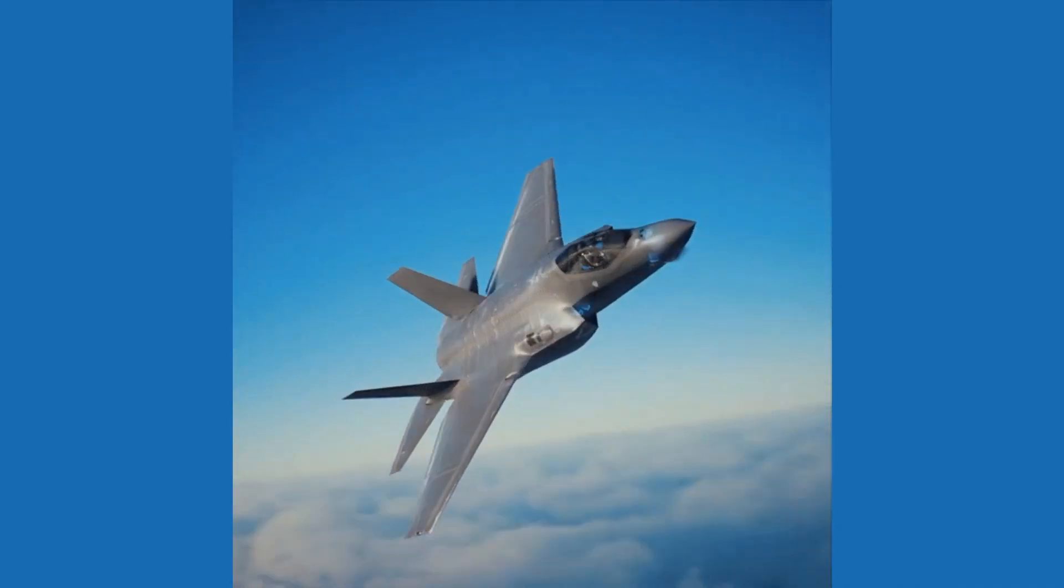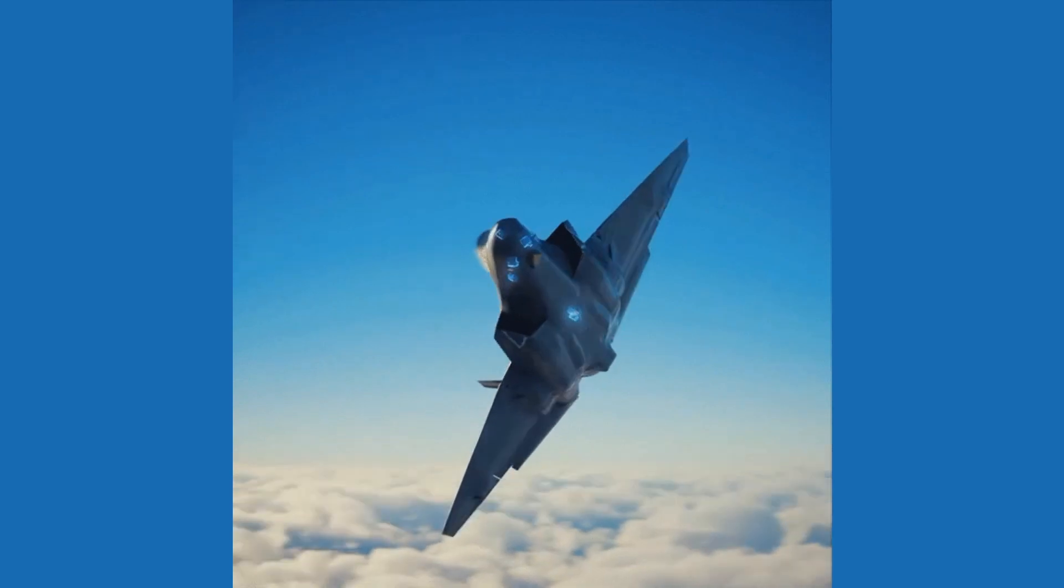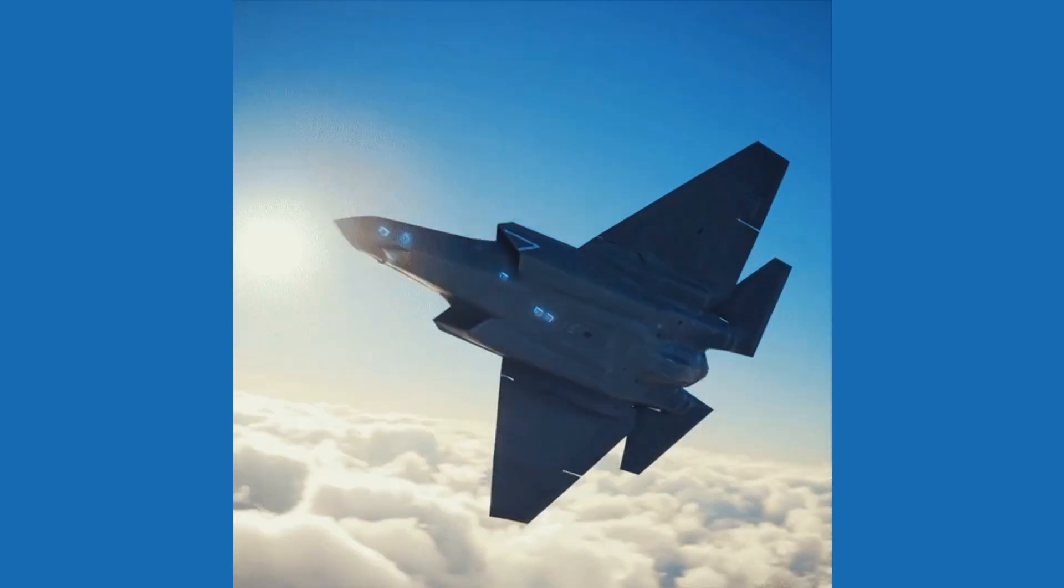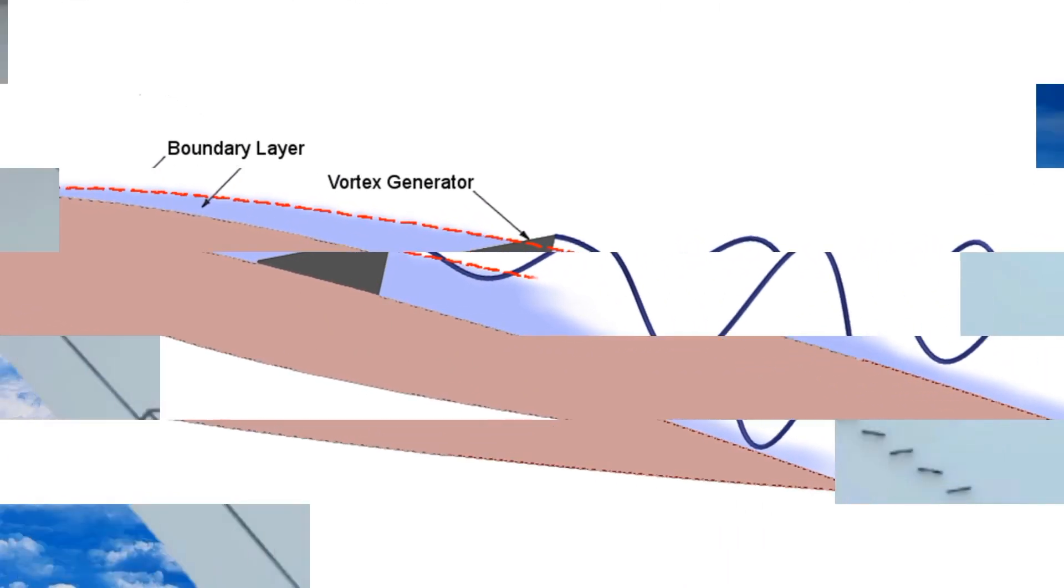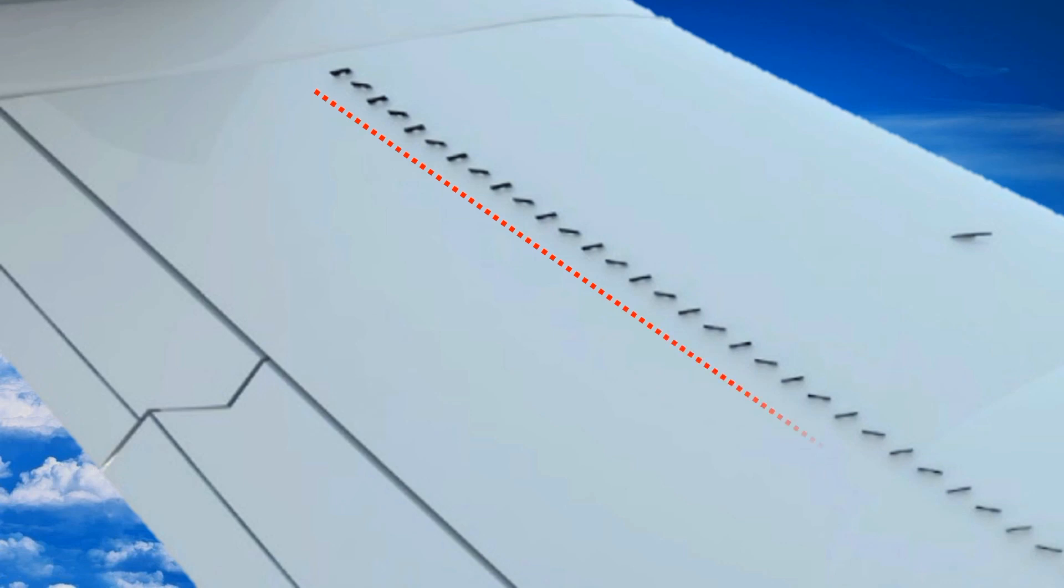In certain cases, the flow may encounter extreme adverse pressure gradients and preventing boundary layer separation can be challenging. Even in such cases, active flow control can be deployed to delay flow separation by introducing controlled turbulence in much the same way as vortex generators on the airplane wing. But as vortex generator is a passive way to introduce turbulence, active control is an active way to achieve it and thus can be optimized and adjusted in real time providing greater flexibility.